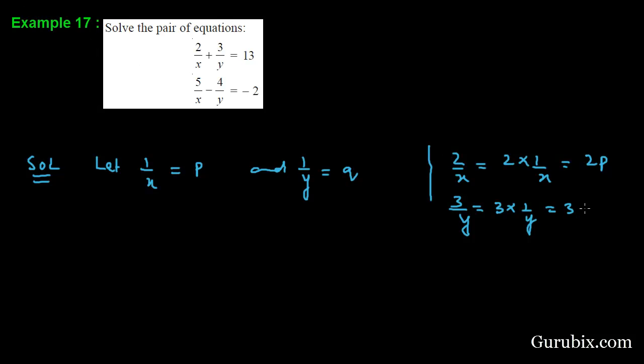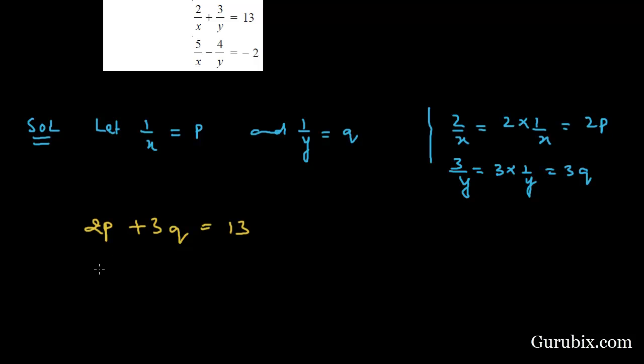3q. This means the first equation will be 2p plus 3q equals 13, and the second equation becomes 5p minus 4q equals minus 2. Let this be equation 1 and this be equation 2. Now we shall use the elimination method to solve these equations, and for that we